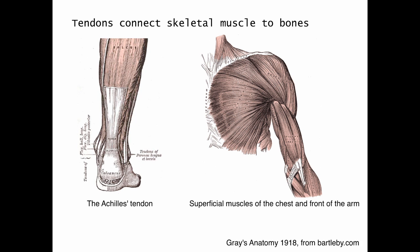Tendons connect skeletal muscles to bones. On the left diagram here, you can see we have the Achilles tendon of the lower leg, which is going to connect skeletal muscle to the bone. And over here, as an example, we've got the biceps brachii muscle, which is going to be connected to its bone by its tendon. Tendons are made of connective tissue.